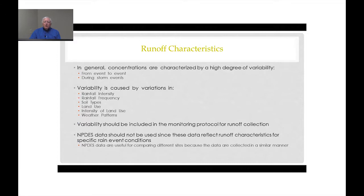Variability in runoff characteristics needs to be included in any monitoring protocol for runoff collection. For example, if you're collecting runoff and trying to estimate runoff characteristics on an annual basis, you need to look at a wide range of runoff events and estimate runoff characteristics for each of these events. A lot of times people ask why we can't just use NPDES data, since there's a lot of that data available collected throughout much of the United States. Unfortunately, the NPDES data are collected under a very specific set of criteria and do not necessarily represent runoff characteristics over an annual average cycle.